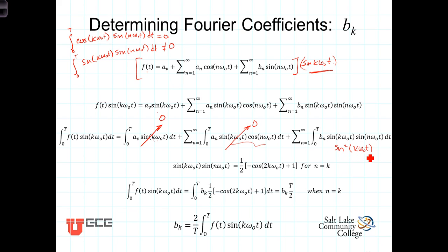That's equal to the sine squared of k omega-0 t. We then use a trig identity: the sine of k omega-0 t times the sine of n omega-0 t equals 1 half of negative the cosine of 2k omega-0 t plus 1 for k equaling n. So, when k equals n, we've got this term here.